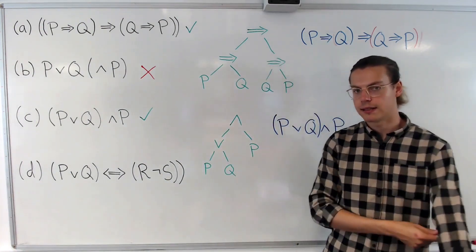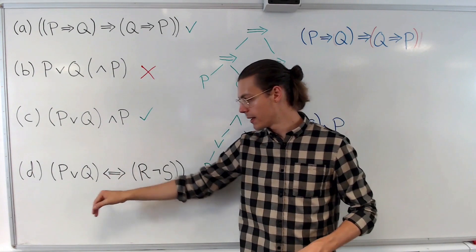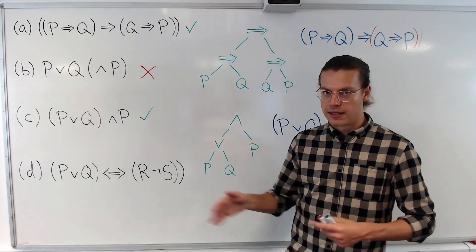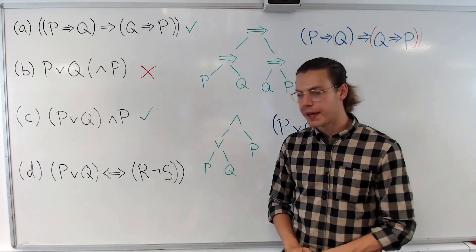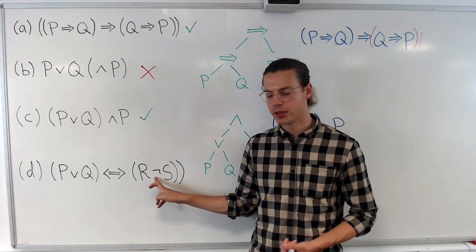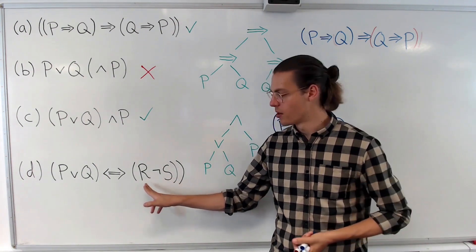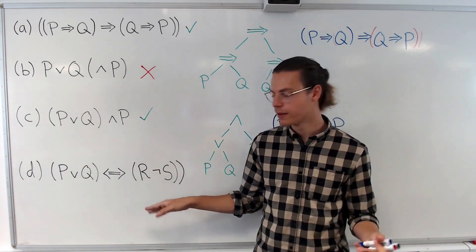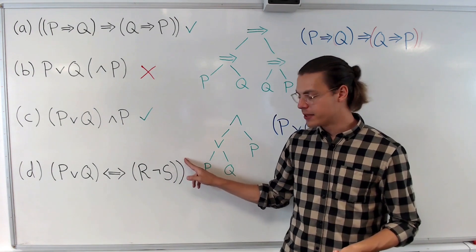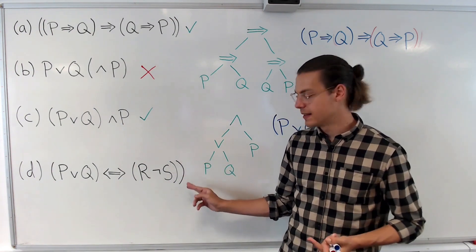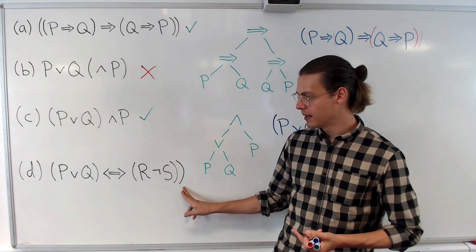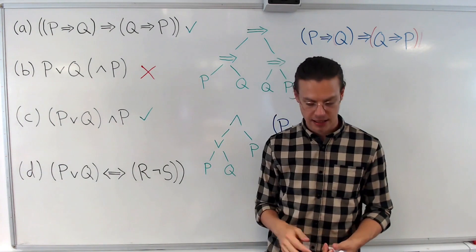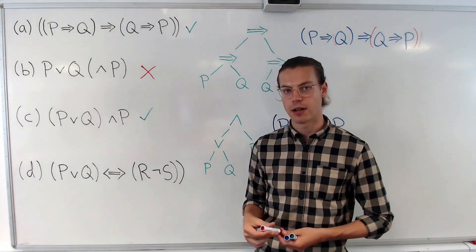Finally, let's look at D: (P OR Q) if and only if (R NOT S). This is not a well-formed formula for a couple of reasons. First, NOT can only be put in front of a statement — it does not join two statements, so there's something missing, perhaps an AND or an OR. Secondly, there are too many closing parentheses — we have three closing parentheses but only two opening. So they're not matched, and this is not a well-formed formula.